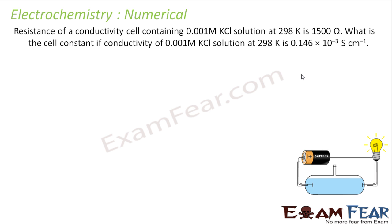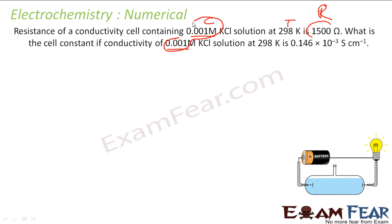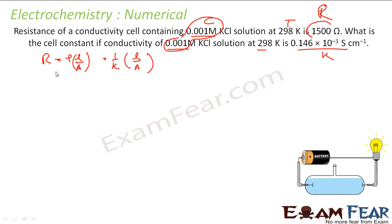The next question: the resistance of a conductivity cell containing 0.01 M KCl solution at 298 K is 150 Ω. We need to find the cell constant. The conductivity of 0.01 M KCl is also given. I know that R = ρ·L/A, and since conductivity κ = 1/ρ, I can write R = (1/κ)·(L/A), where L/A is the cell constant G*.